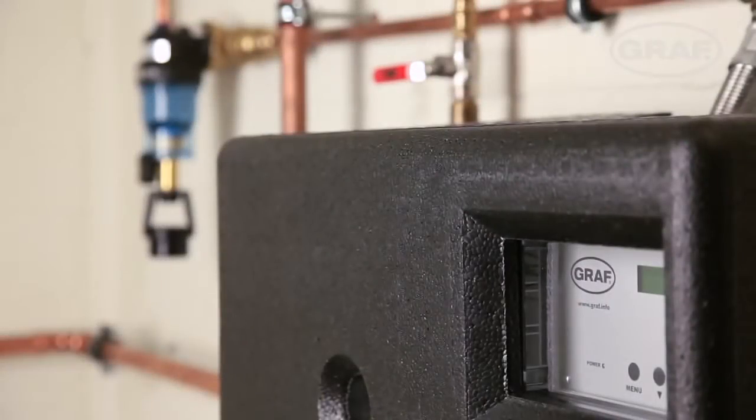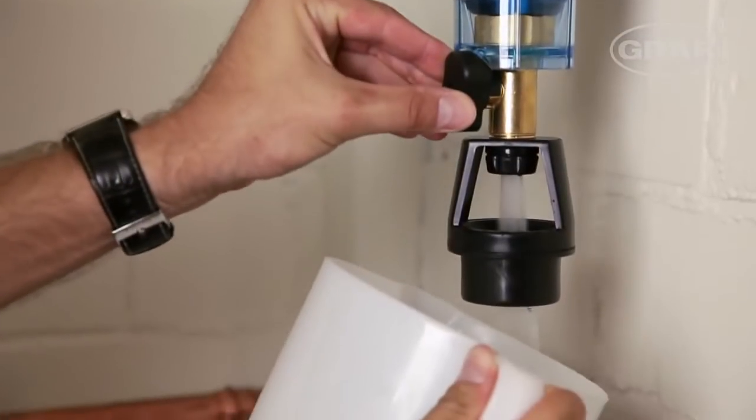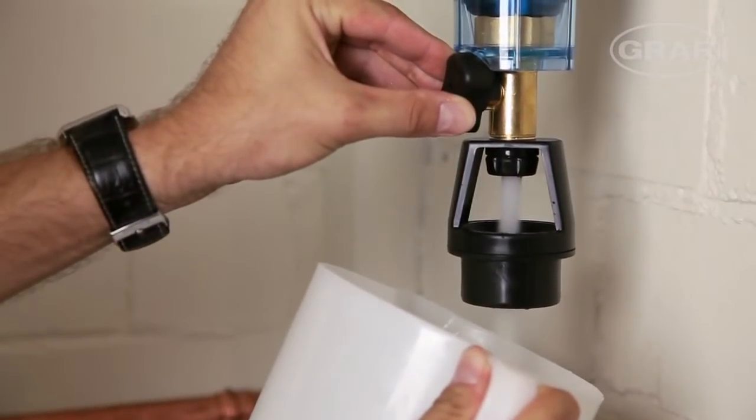If the rainwater is used for toilet flushing and washing machines, we would recommend using a reversible flow filter. This should also be rinsed twice a year.